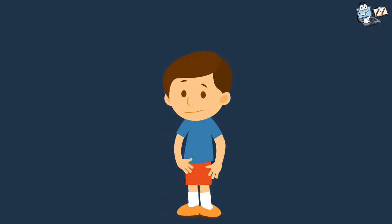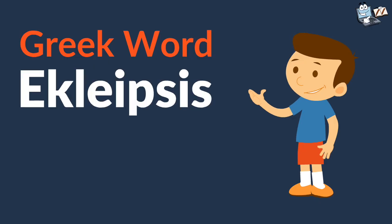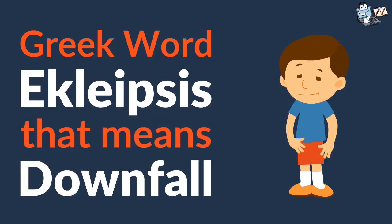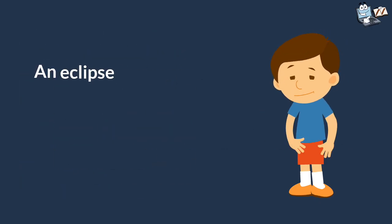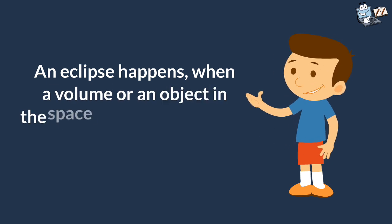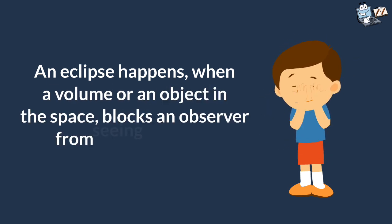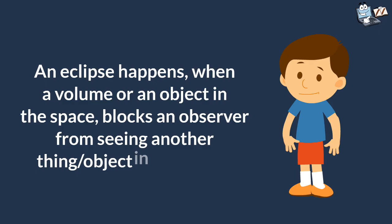The word eclipse is taken from the Greek word eclipsis. That means downfall or abandonment. An eclipse happens when a volume or an object in space blocks an observer from seeing another object in space.